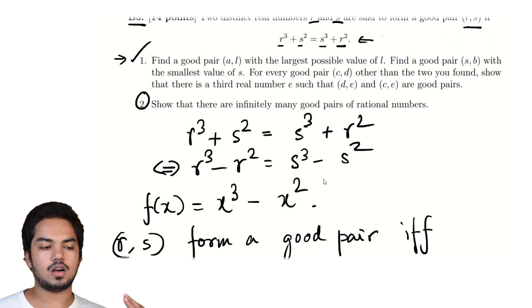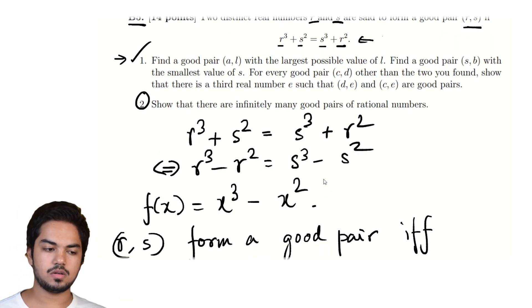And now we are asked to find different kinds of good pairs. Really, what we want to do is look at the graph of this function. And polynomials are well known to be easy to graph.